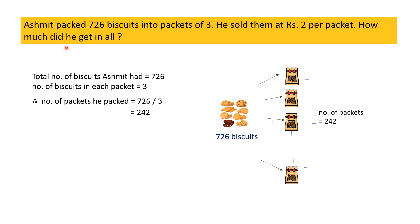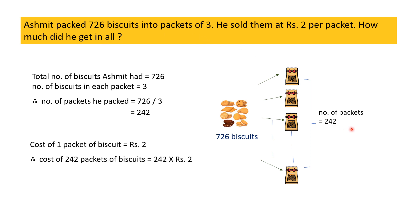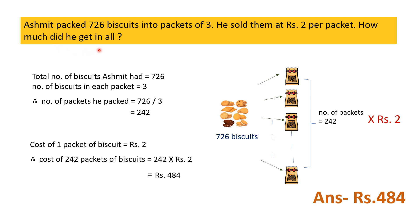Now, how much did he get in all? Cost of 1 packet of biscuits is Rs.2. Therefore, cost of 242 packets is 242 into Rs.2, which is equal to Rs.484. Ashmit got Rs.484 in all.